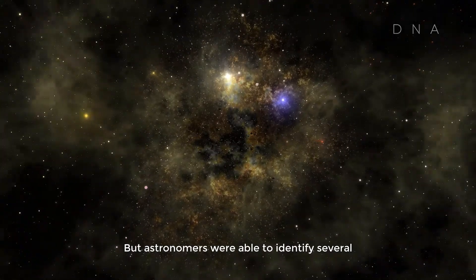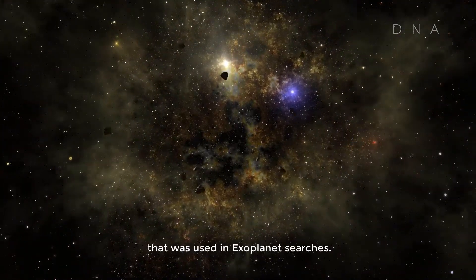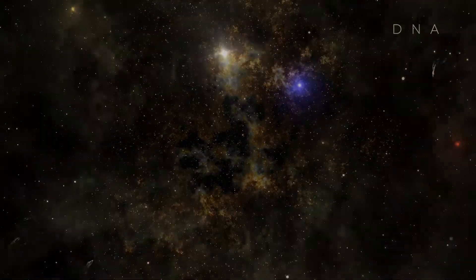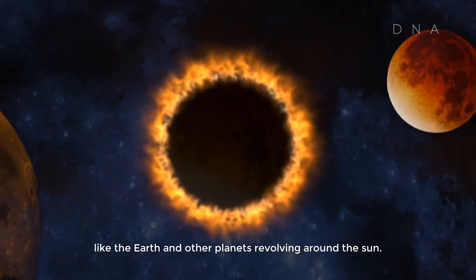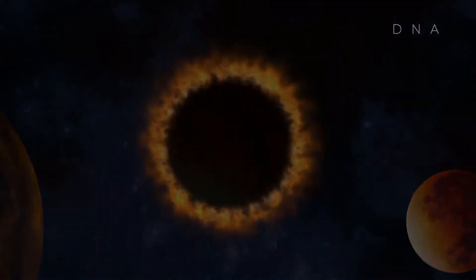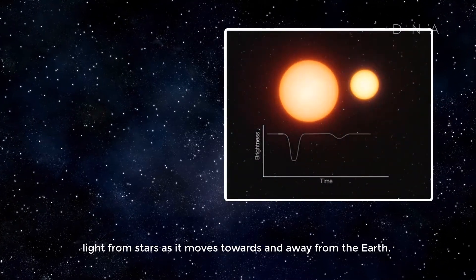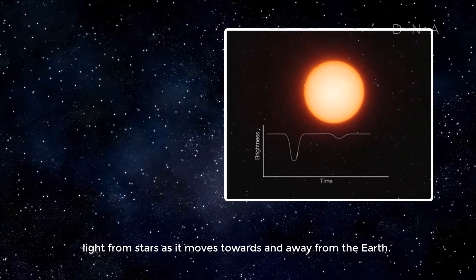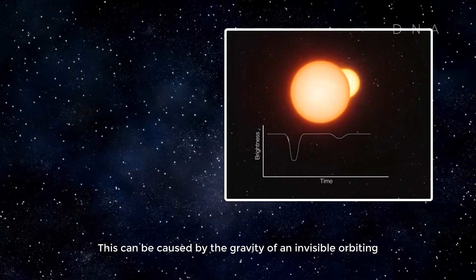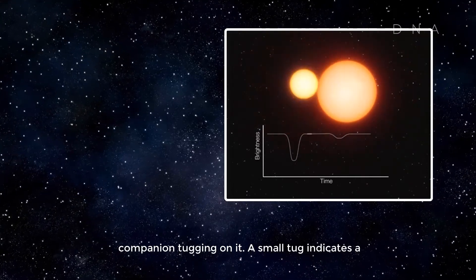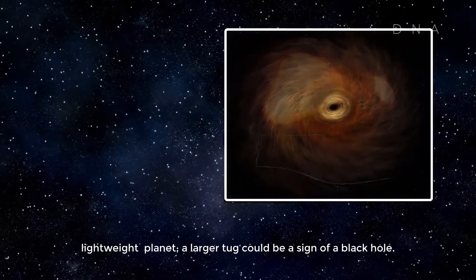But astronomers were able to identify several non-accreting black hole candidates using a technique that was used in exoplanet searches. Exoplanets are planets that revolve around a star like the Earth and other planets revolve around the Sun. Exoplanet hunters look for periodic shifts in the frequency of the light from stars as it moves towards and away from the Earth. This can be caused by the gravity of an invisible orbiting companion tugging onto it. A small tug indicates a lightweight planet. A larger tug could be the sign of a black hole.